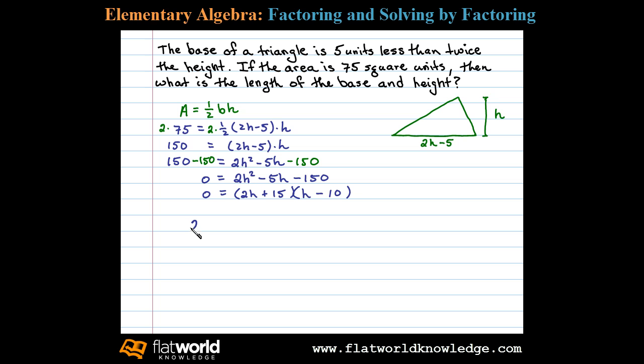We then set each factor equal to zero. 2h plus 15 equals zero, or h minus 10 equals zero. In this case, when we subtract 15 on both sides, we'll have 2h equals negative 15, and then dividing by 2, we have h equals negative 15 halves. Here, if we add 10 to both sides, we'll have h equals 10.